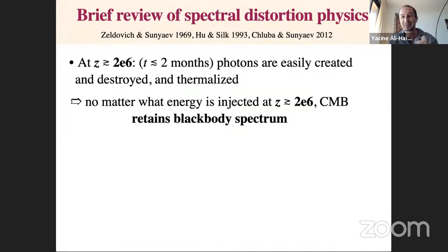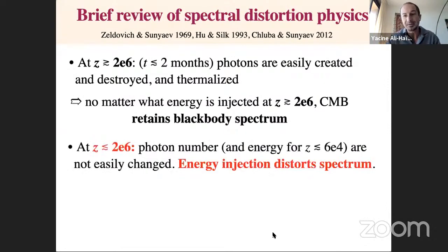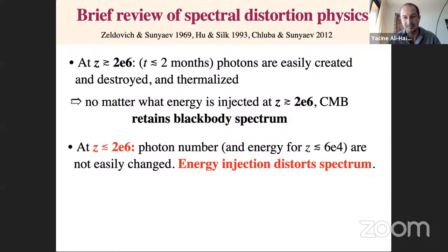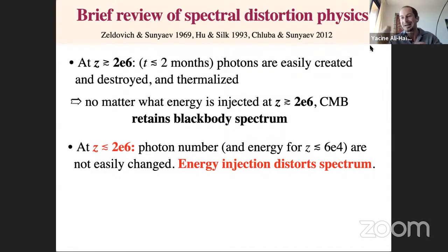At redshifts less than about 2 million, photon number is no longer conserved; photon energy can be easily changed by Thomson scattering down to redshift about 60,000. Eventually even photon energy is no longer easily changed. So if you inject energy into the plasma, it will in general distort the CMB spectrum away from a perfect blackbody. The specific shape depends on when and how you inject the energy.